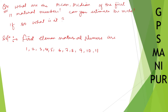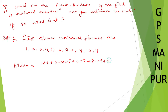We need to find the mean. Mean is equal to the sum of all values divided by the count. So we calculate: 1 + 2 + 3 + 4 + 5 + 6 + 7 + 8 + 9 + 10 + 11, all divided by 11. Adding in pairs: 9+1=10, 8+2=10, 7+3=10, 6+4=10, giving us 40.